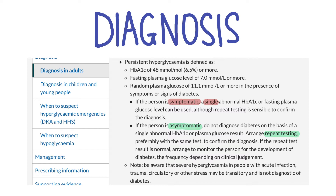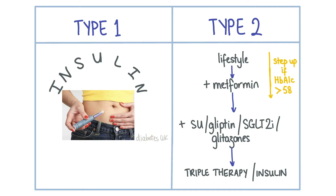An HbA1c between 42 and 47 mmol/mol is referred to as pre-diabetes. People with pre-diabetes should be closely monitored and advised on lifestyle measures such as weight loss to prevent blood glucose levels reaching diabetic levels.